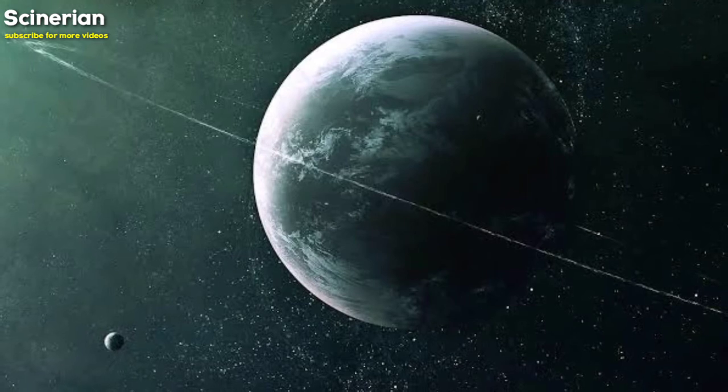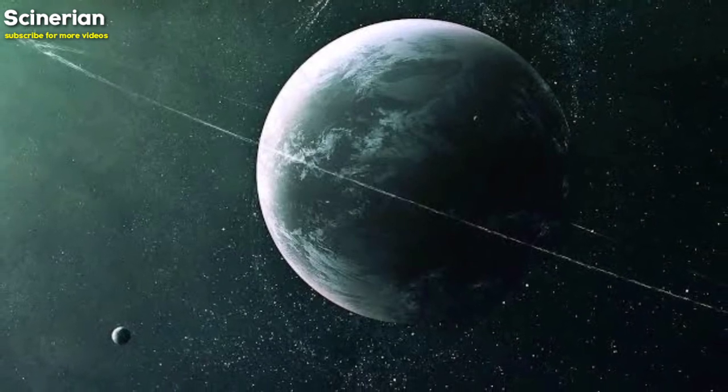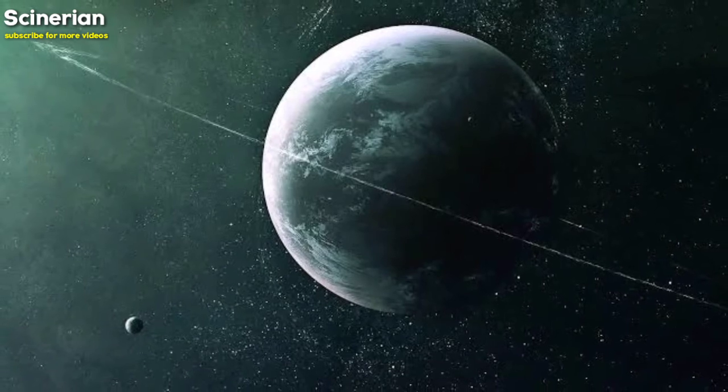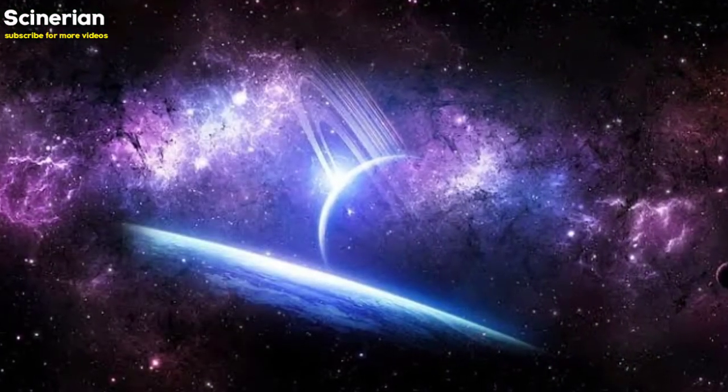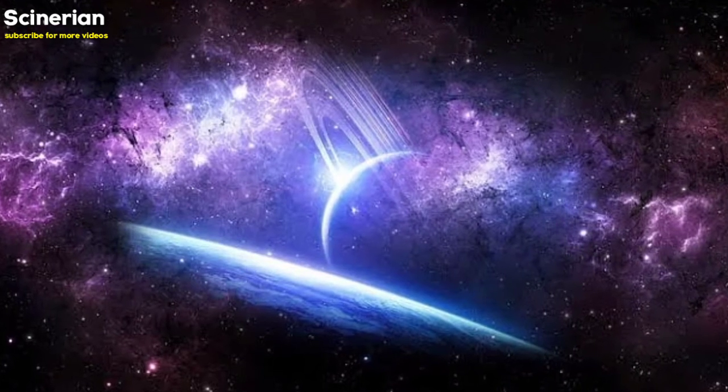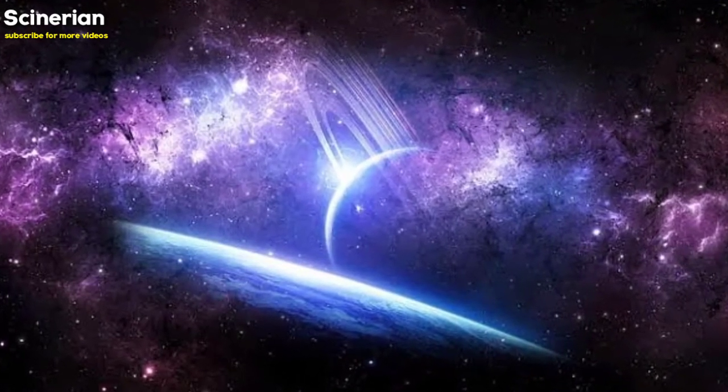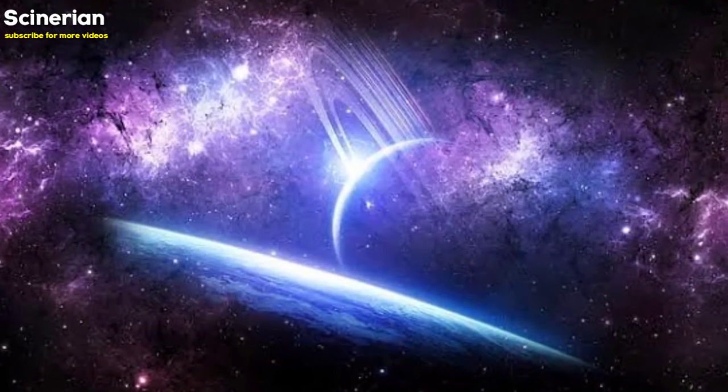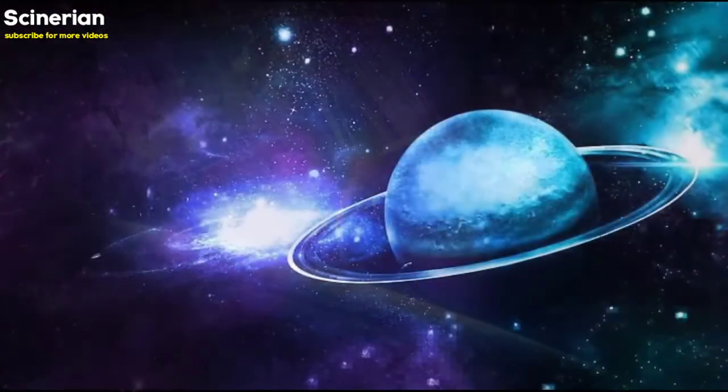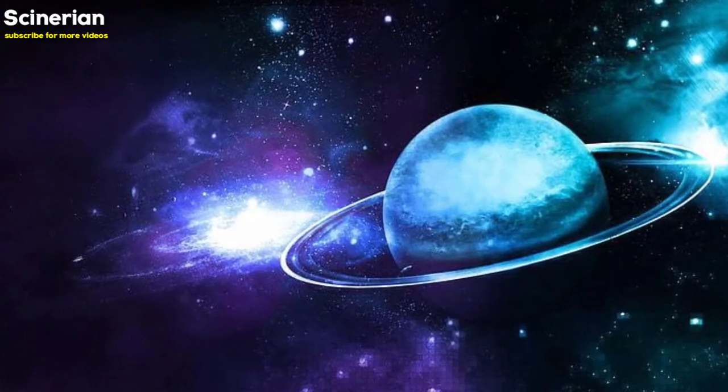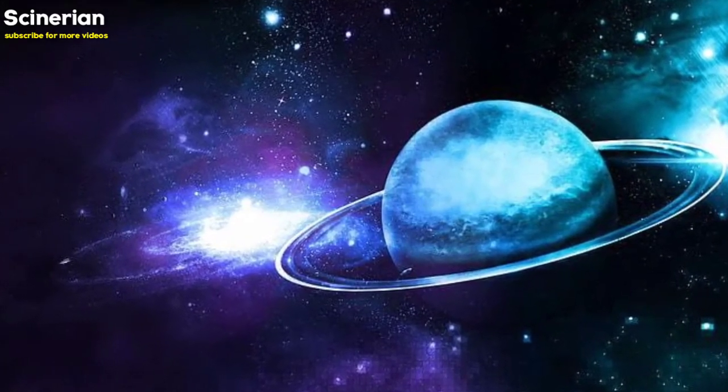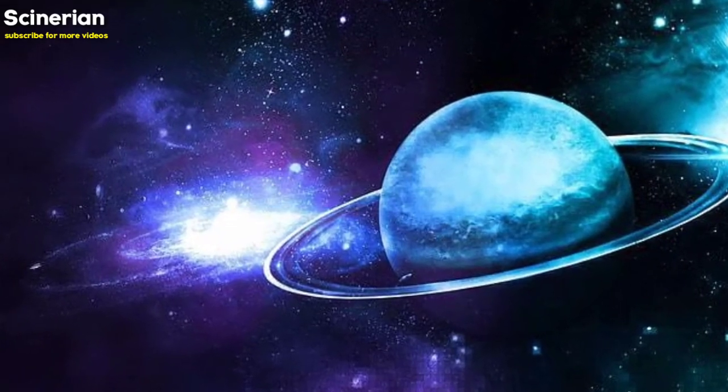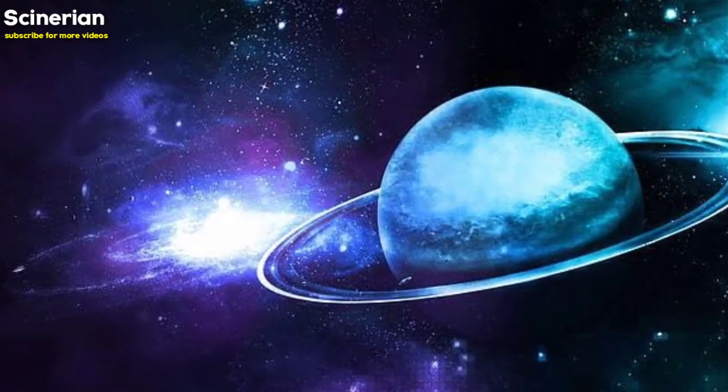Uranus is the seventh planet from the Sun and the third largest of all the planets in our solar system. Both Uranus and Neptune are considered ice giants due to their different compositions from the other gas giants Jupiter and Saturn. Both Uranus and Neptune are blue because they have methane. Uranus is larger in size than Neptune, but it is smaller in weight. It has a 13 ring system and 27 confirmed moons.